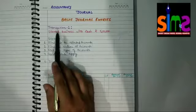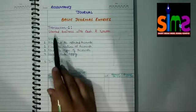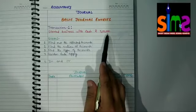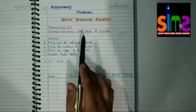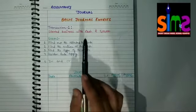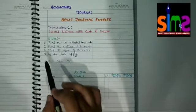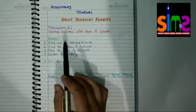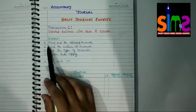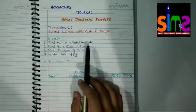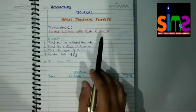The first transaction I have taken here is: started business with cash, rupees five lakh. How do we pass the journal entry for this? According to the traditional approach, which follows the golden rules of accounting, we have to follow five steps for recording the journal entry. The first step is to find out the affected accounts — which accounts are affected in this transaction.